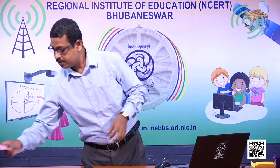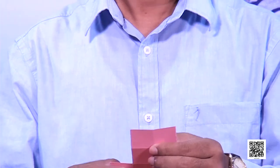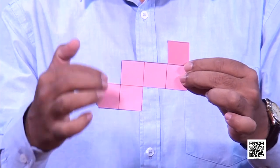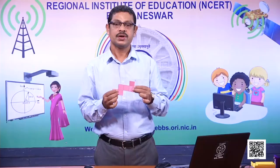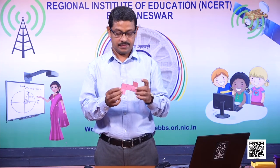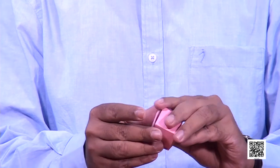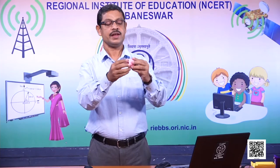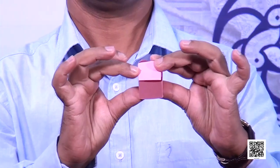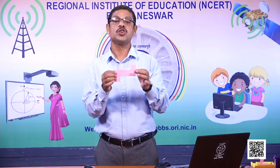Now, will this shape fold into a cube? Let me find out. I have to fold this shape along the lines — whether it is forming a cube or not. What is a cube? In a cube, all faces are square faces, and each side is equal. I am folding it into a cube. This shape can be folded into a cube.